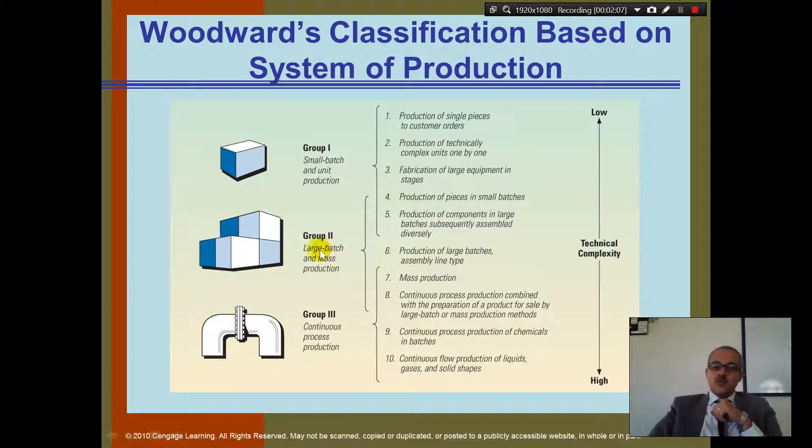Batch 2, we have large batch in mass production. That's when we make maybe 20 cakes for one big event. Continuous process production, that's when we continue and we produce a lot of cakes for so many people. Do you see? Are you guys okay with this?